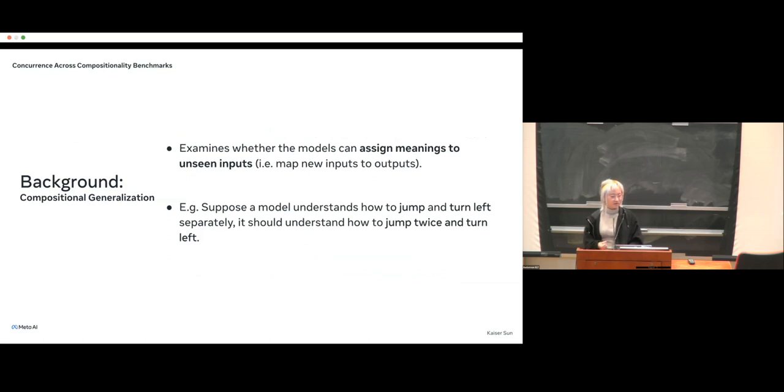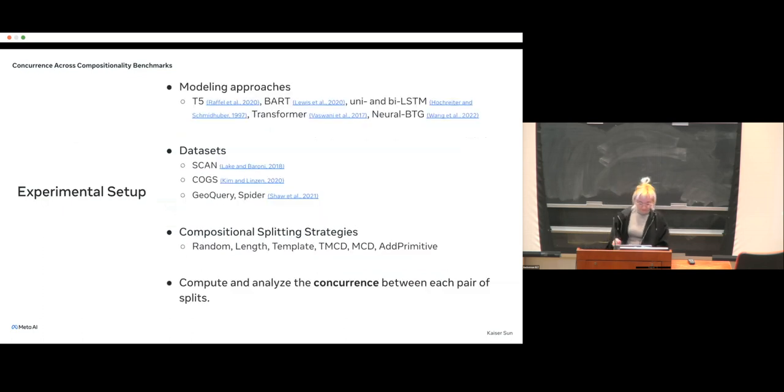The research question that we are trying to answer in this paper is: how do different data set design choices impact the conclusion about compositional generalization? Our findings, if oversimplified into one sentence, is that those compositionality benchmarks don't quite agree with each other, even when they share the same notion of compositionality or data separation type. This is the core figure from our experiments. Compositional generalization can be roughly understood as the ability of the model assigning meaning to new inputs. For example, suppose the model knows how to jump and turn left separately, it should automatically understand how to jump twice and turn left as the composition comes in.